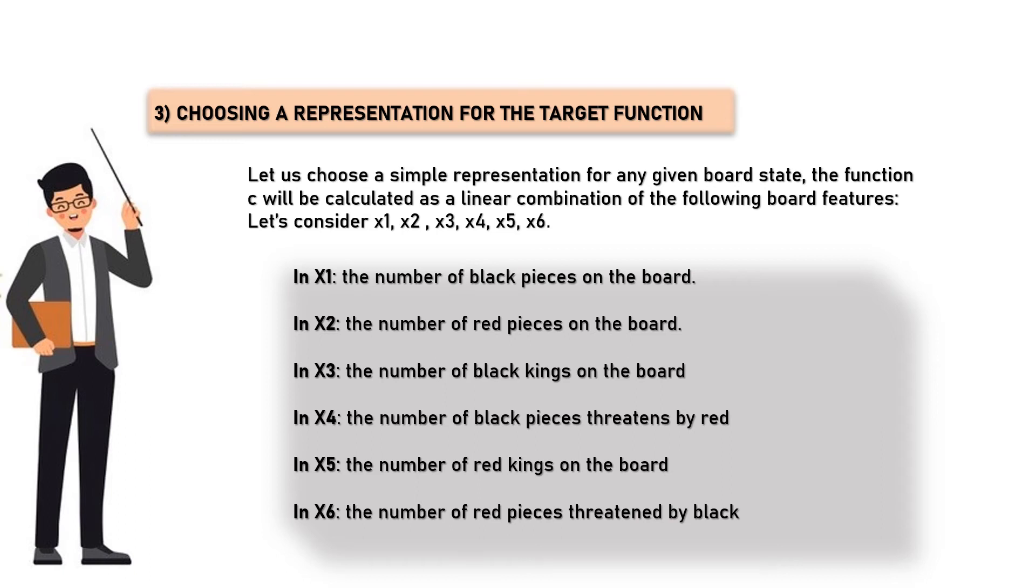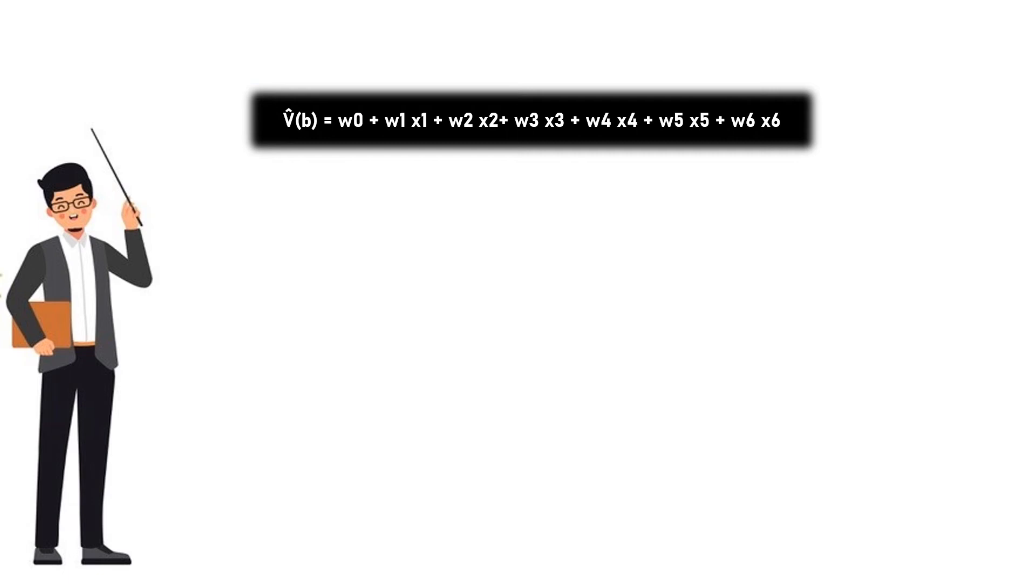In x3, the number of black kings on the board. In x4, the number of black pieces threatened by red. In x5, the number of red kings on the board. In x6, the number of red pieces threatened by black.